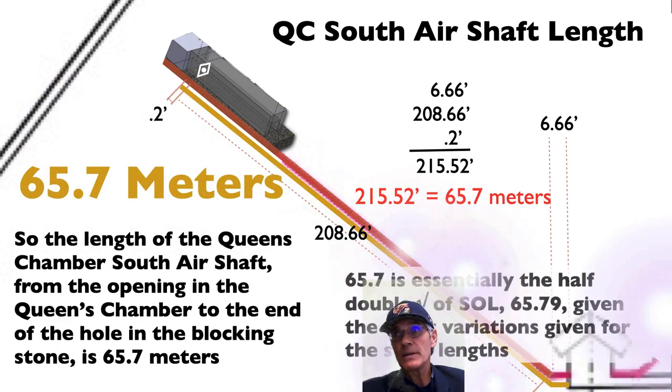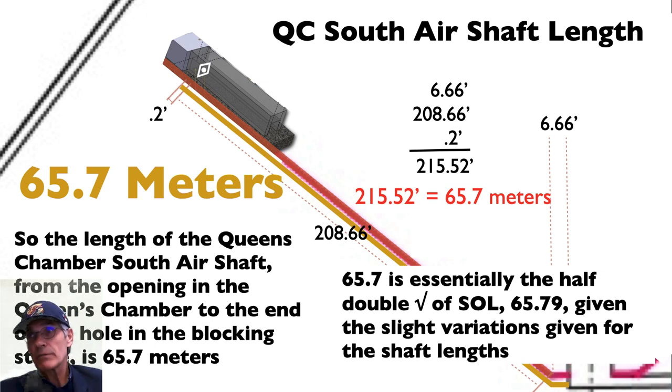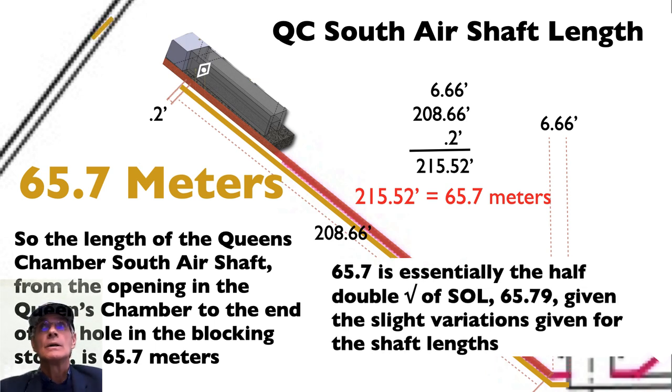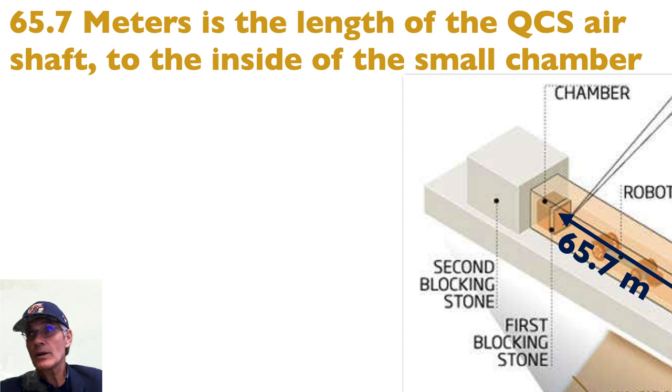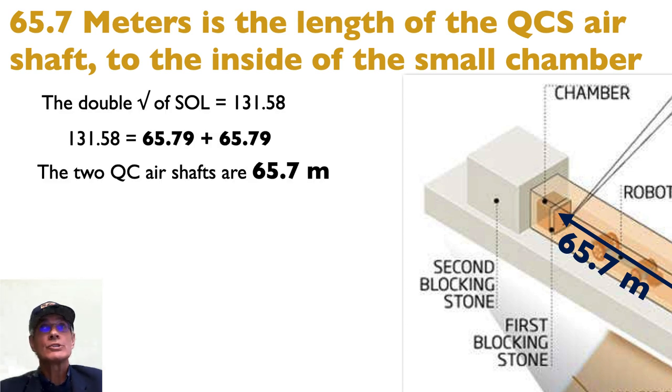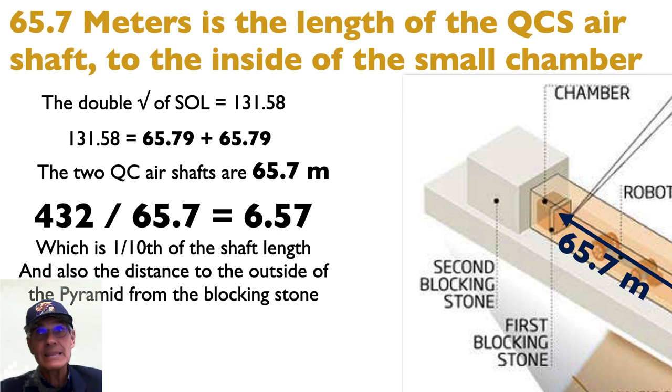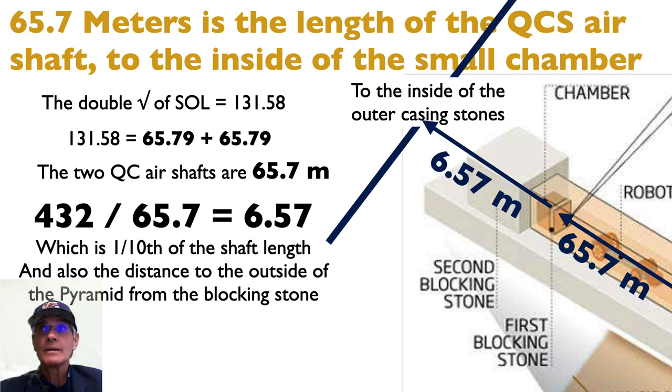So 65.7 meters. So that's essentially the double square root of the speed of light, 65.79, because there's slight variations given in the shaft length. So essentially they're the same number. So now if we go from the blocking stone to the inside of the casing stones, but outside the original blocks that are there, or the blocks that exist there now, it's 6.57 meters. So 65.7 meters, the length of the Queen's Chamber air shaft as we've shown. So it's to right there, that's 65.7 meters. And then we showed, you know, that's the length there, but the two Queen's Chamber air shafts are, as we said, 65.7. But if you divide that by 432, you get 6.57, which is the length from the blocking stone to the outside of the pyramid. Wow.